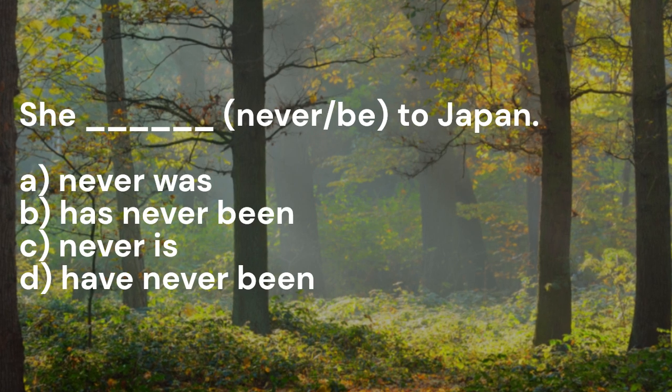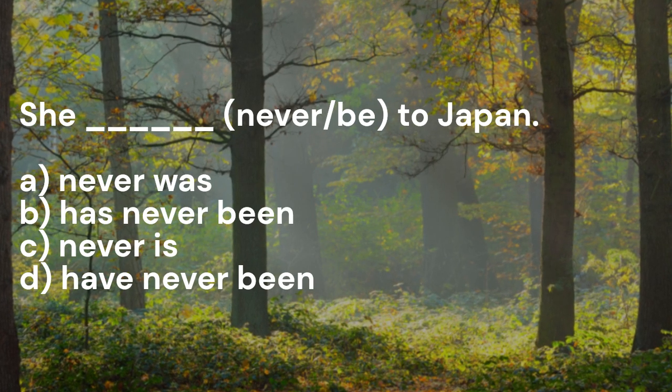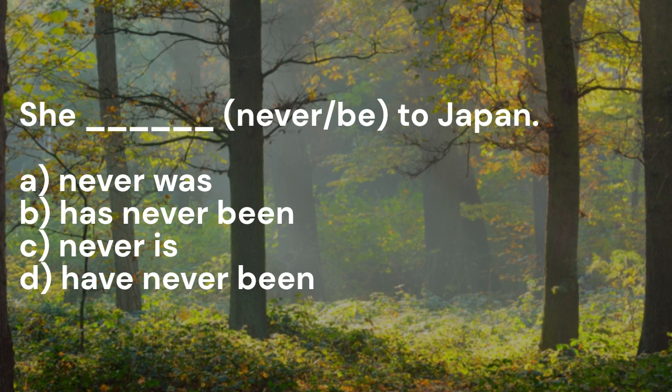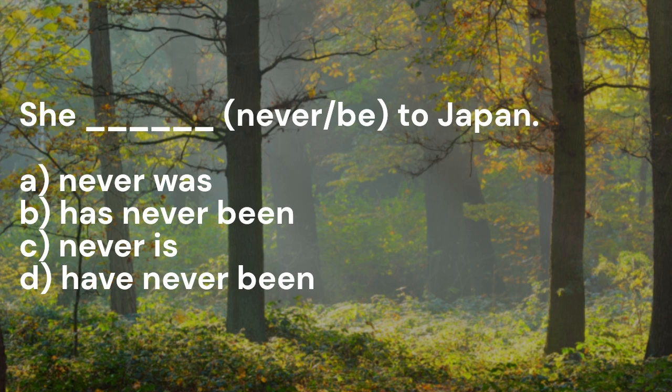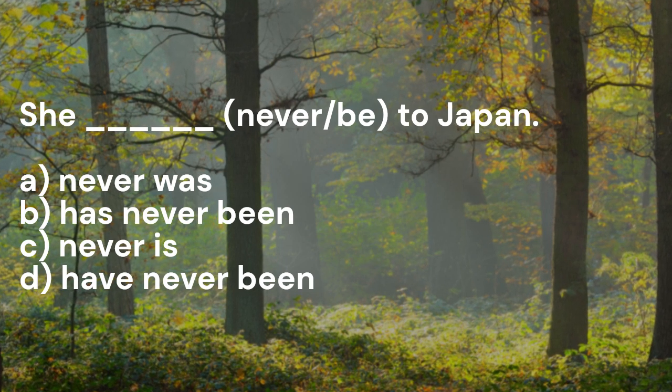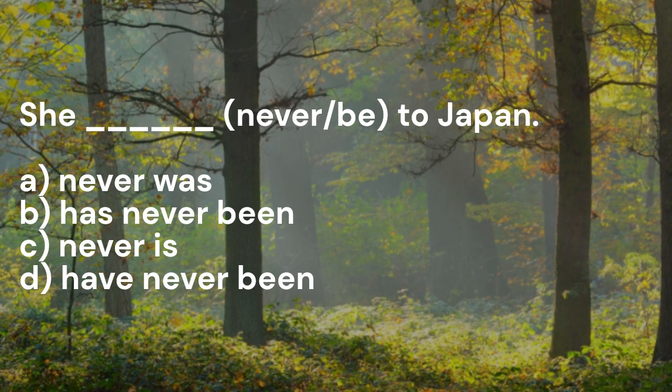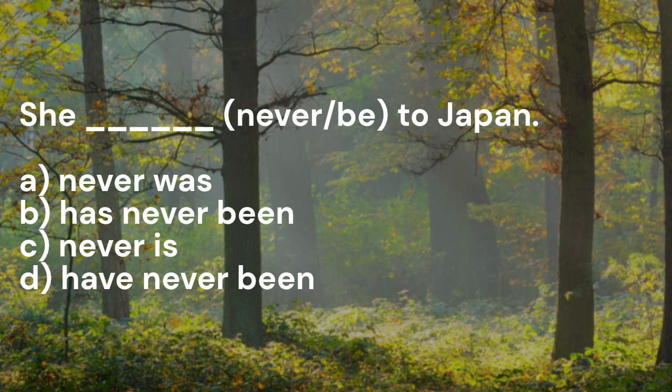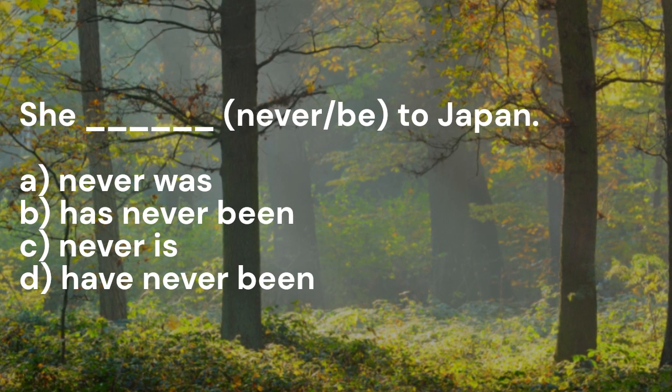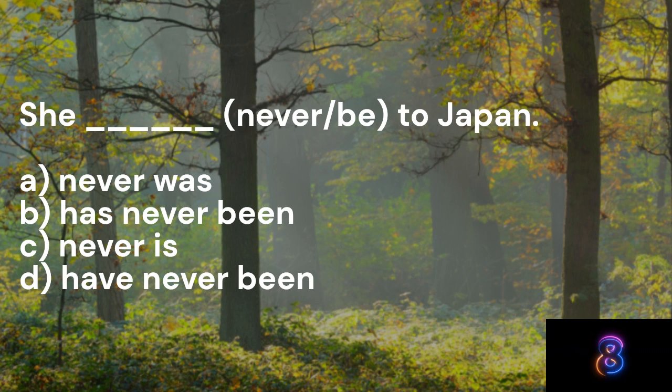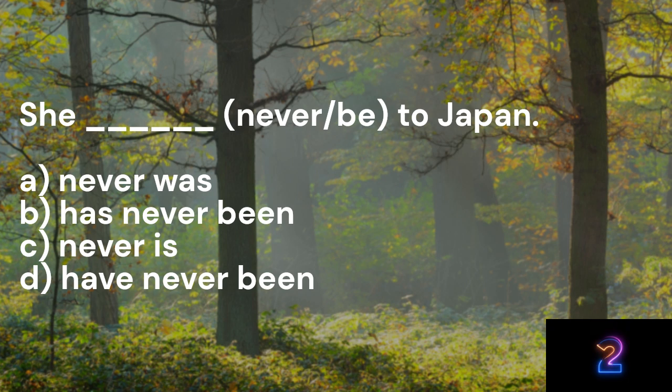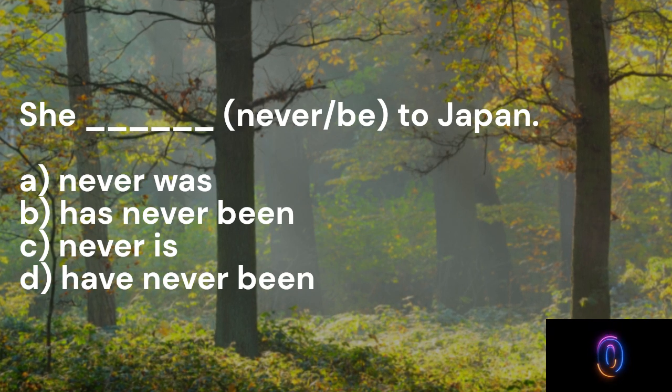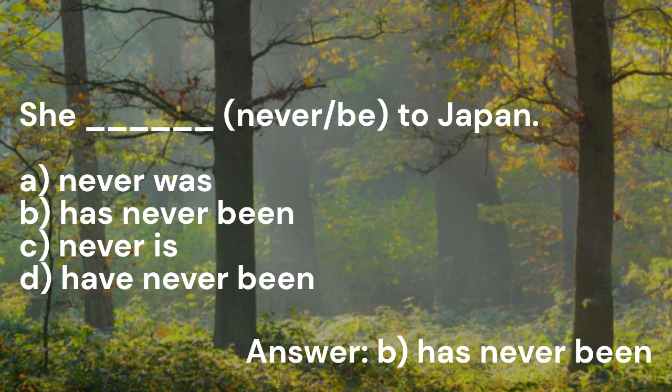She underscore to Japan. A: Never was, B: Has never been, C: Never is, D: Have never been. Answer B: Has never been.